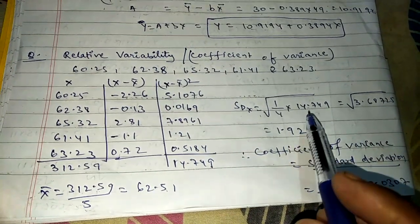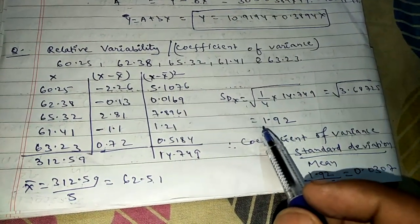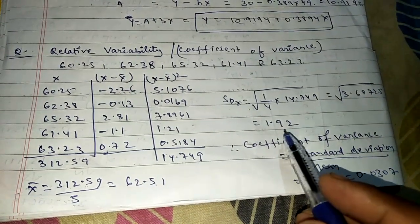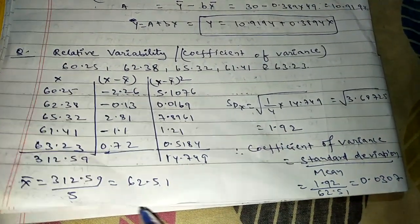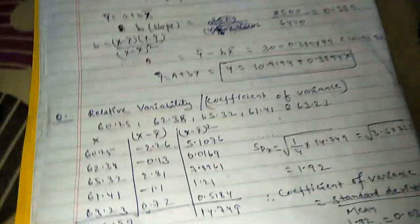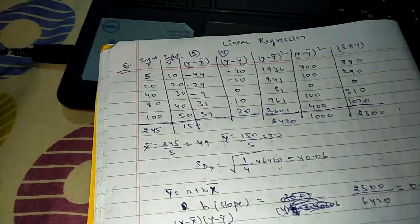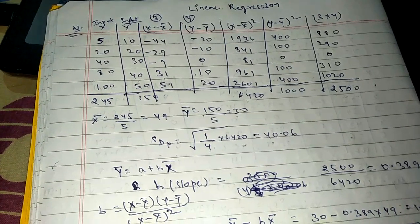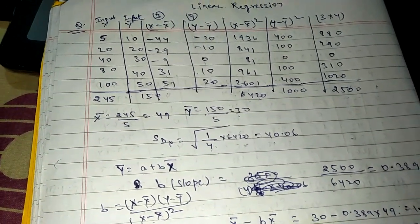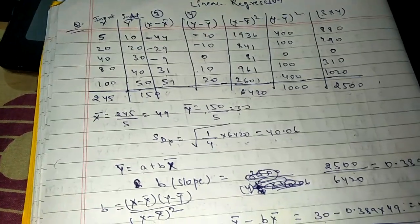Calculate the standard deviation: n = 5, n minus 1 = 4. Root of 14.749 divided by 4 = root of 3.687 = 1.92. The coefficient of variance equals standard deviation divided by mean: 1.92 divided by 62.51 = 0.037. This is very important for ABM and examination purposes. Through a simple formula using tables, it is very easy to calculate. Thank you very much.